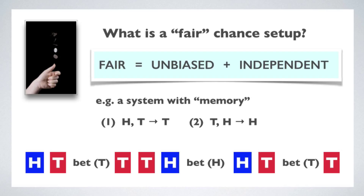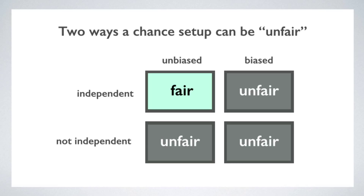In general, if it's possible to come up with a betting system that is guaranteed to have one side come out a winner in the long run, then by definition, it's not a fair chance setup. So going back to our concept of a fair chance setup, we see that because fairness has two components to it, there are a number of different ways that a setup can be unfair. You can have independent events but biased outcomes. You can have outcomes that are unbiased but not independent. You can have outcomes that are both biased and not independent.